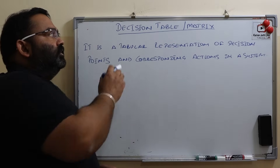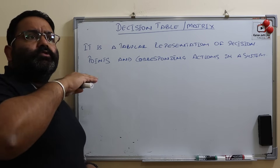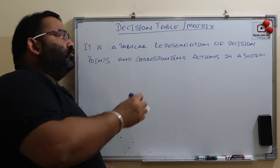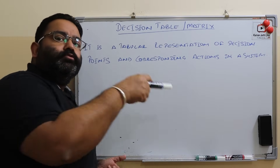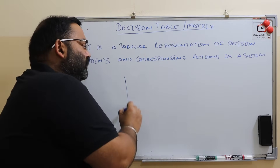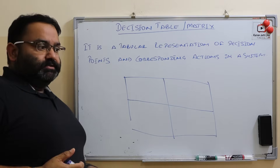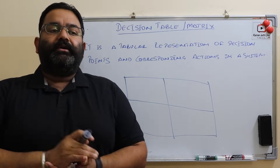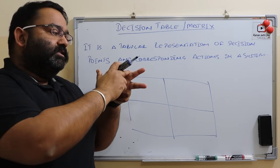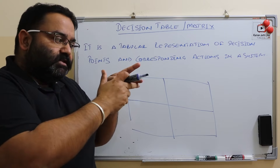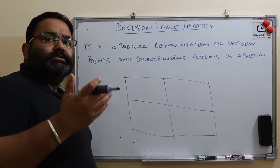The first thing is the definition — what is a decision table? A decision table is a table or a matrix. A table is basically a collection of rows and columns. We can represent all the decision points in a system and all the actions related to those decisions in the form of a table, and then we call it a decision table.